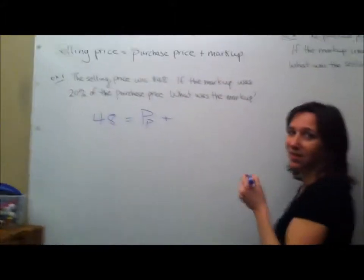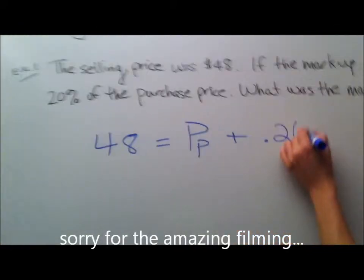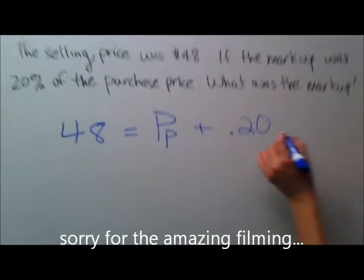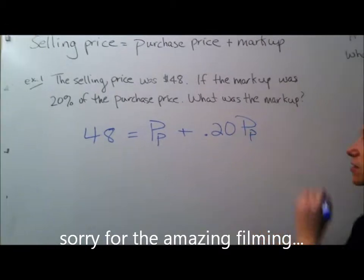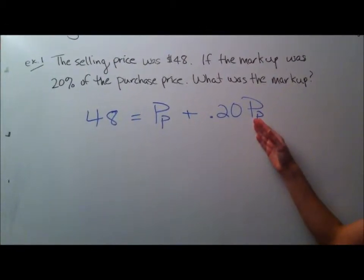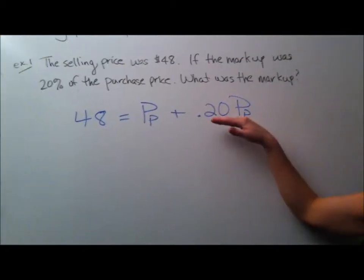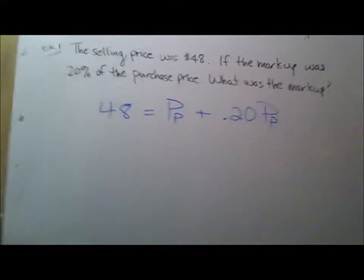There is a stink bug. There's a stink bug in our room and it's making the video crazy. The purchase price is what we don't know. So we don't know 20% of the purchase price. So the markup is 20% of the purchase price. We don't know the purchase price. So we figure out the markup is 20% of the purchase price.